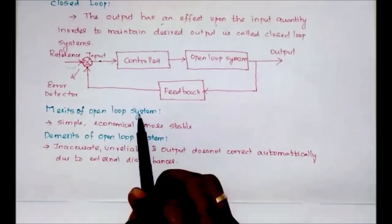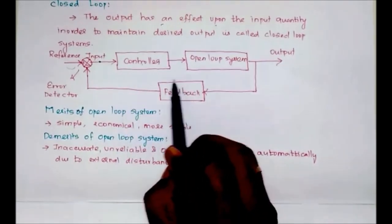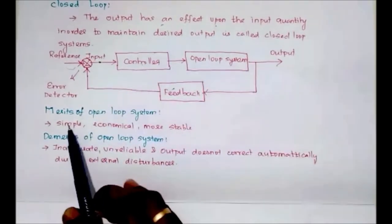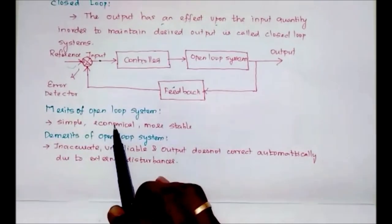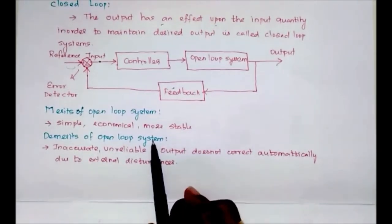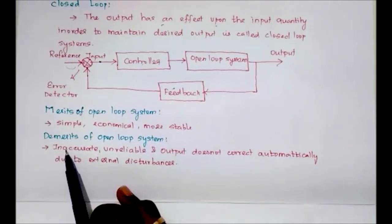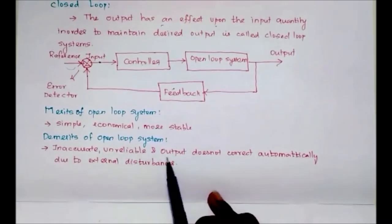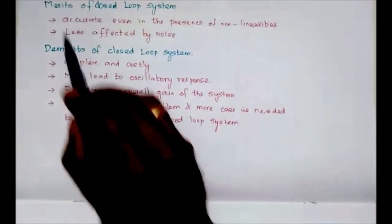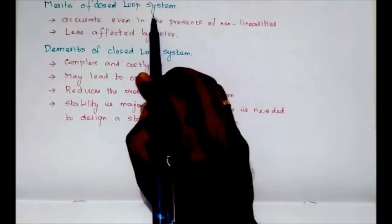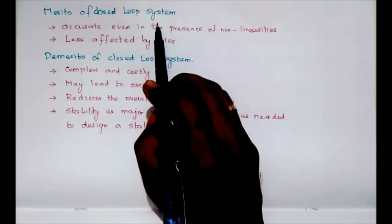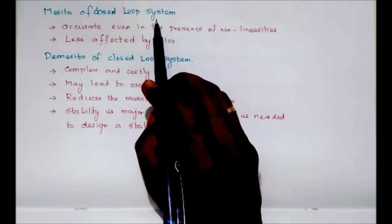The merits of an open loop system: since there is no feedback, only input and output sides, it is simple, economical, and more stable. The demerits of an open loop system: it is inaccurate, unreliable, and the output does not correct automatically due to external disturbances.